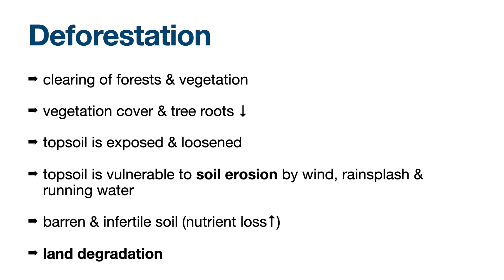Land degradation means the piece of land is getting worse — the quality of land is downgrading. For example, if you do a geography exam and get an A, and then you don't do so well and get a B, changing the grade from A to B is a downgrade. It means the quality is lower, so that piece of land becomes not as good.